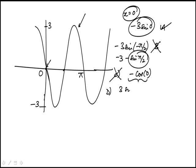d is three sine minus pi which is minus three sine pi. This is going to be zero. So d is a possibility.